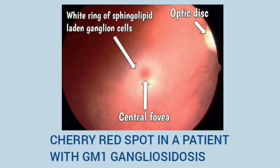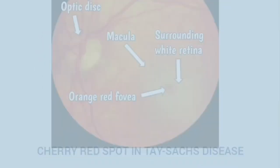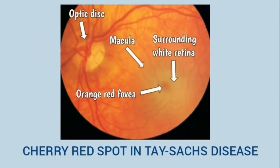This is a cherry red spot in a patient with GM1 gangliosidosis. There is a central red fovea surrounded by a white ring of sphingolipid-laden ganglion cells. This is the cherry red spot in Tay-Sachs disease — you can see the orange-red fovea surrounded by a white retina.